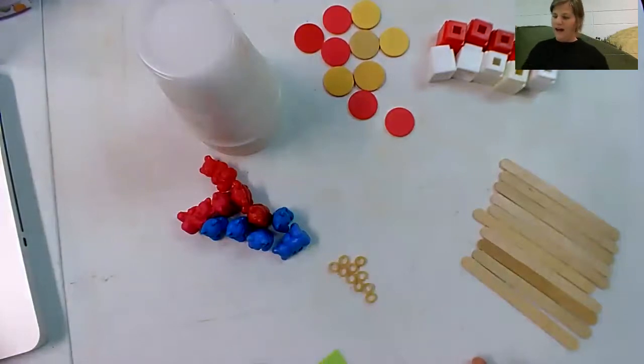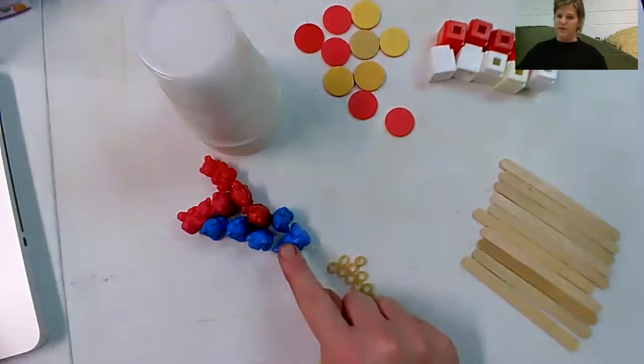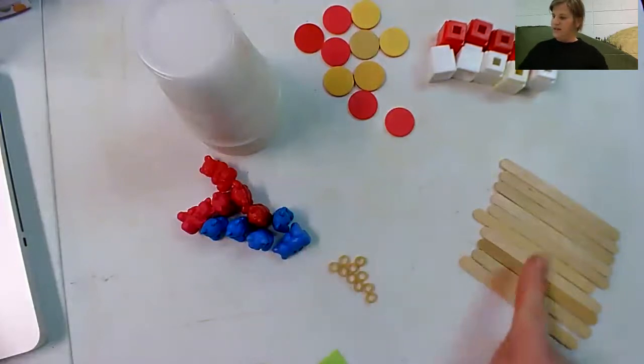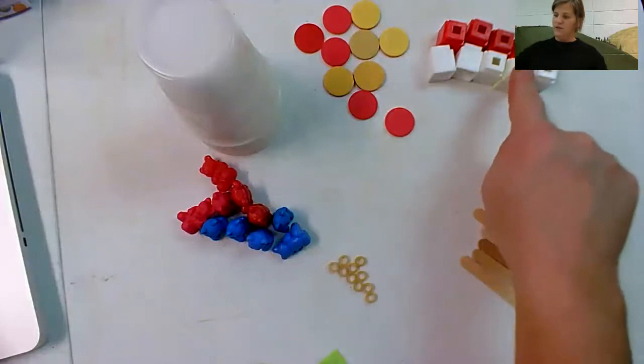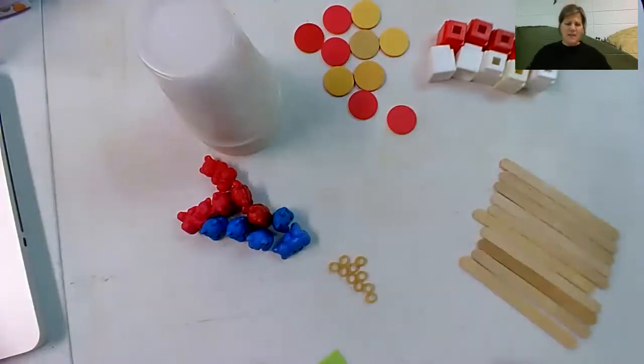Now, I know at home, you guys should have the bears, the popsicle sticks, the unifix cubes, and the chips. Maybe you could find another grouping of something. Maybe you could find some popcorn kernels, some crayons or some markers. And maybe you can count out 10 of those. See how many different times you can count to 10. Have so much fun with it. And thanks for watching.